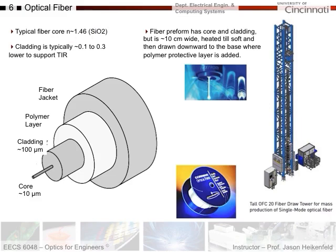A typical fiber core is silicon dioxide, typically around 10 microns thick if it's a fiber that has a few modes. Then you have a lower index cladding which is typically 0.1 to 0.3 lower in refractive index to support total internal reflection. Then you've got a polymer layer which helps protect the fiber and then a fiber jacket which protects it even further.